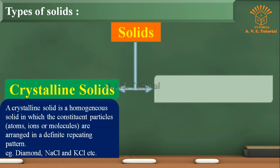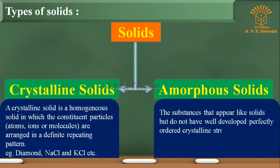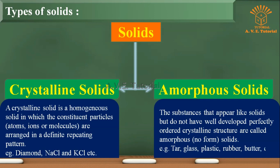Let us see what is the meaning of amorphous solid. The substances that appear like solids but do not have well-developed, perfectly ordered crystalline structure are called amorphous or no-form solids. Examples: tar, glass, plastic, rubber, butter, etc.